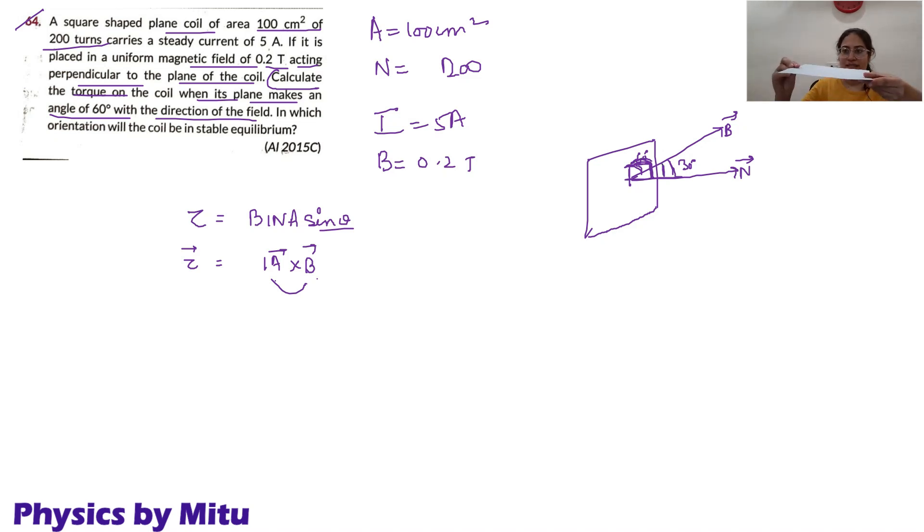I will explain again. Let this be the square coil. This is the normal to the coil. I am taking this as the plane of the coil. You will imagine the coil. This is a square shaped coil. Now, this is the normal to the coil. This is the magnetic field.